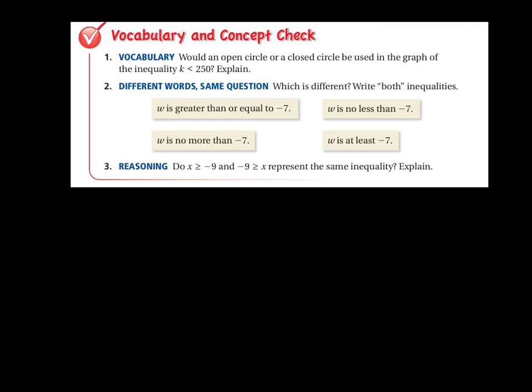All right, let's jump right in and let's try some problems then. All right, so start with number one. Would an open or closed circle be used in the graph of the inequality k is less than 250? Well, let's think it out for a minute. All right, so we have number one. We have k is less than 250.